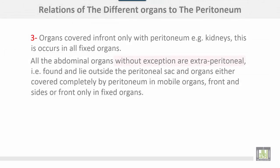All abdominal organs without exception are extraperitoneal — that is, they lie outside the peritoneal sac. The organs are either covered completely by peritoneum in mobile organs, covered on the front and sides only as in the ascending and descending colons, or covered in front only as in fixed organs such as the anterior surface of the kidney.